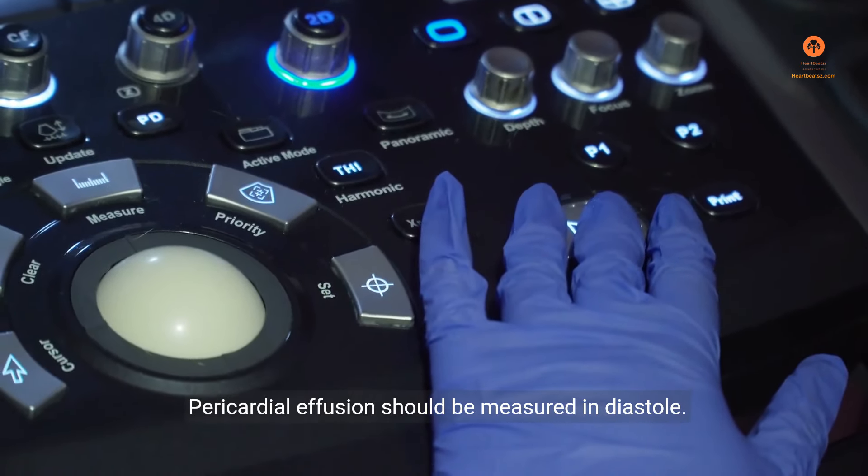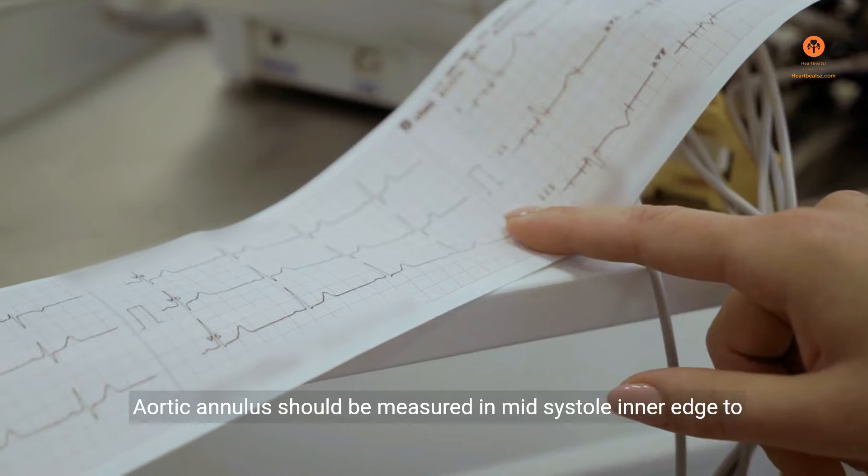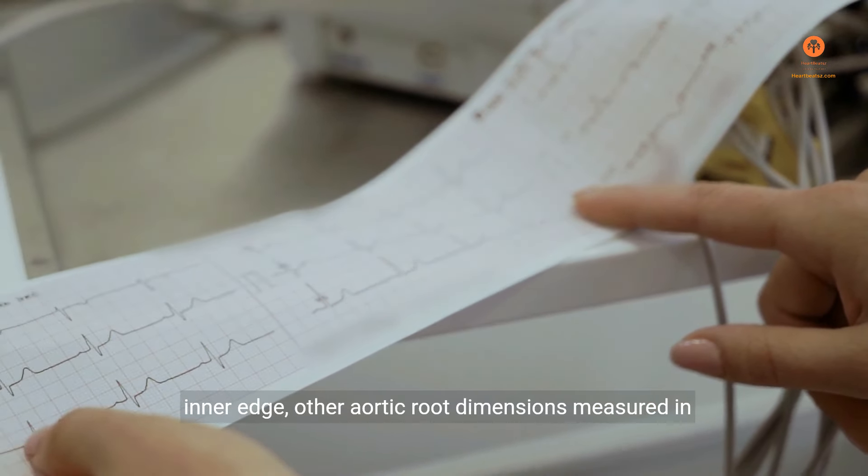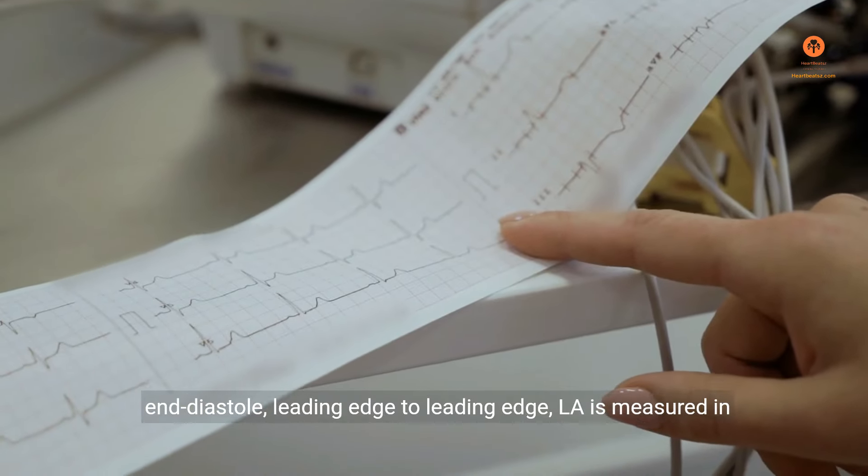Pericardial effusion should be measured in diastole. Aortic annulus should be measured in mid-systole, inner edge to inner edge. Other aortic root dimensions measured in end-diastole, leading edge to leading edge.